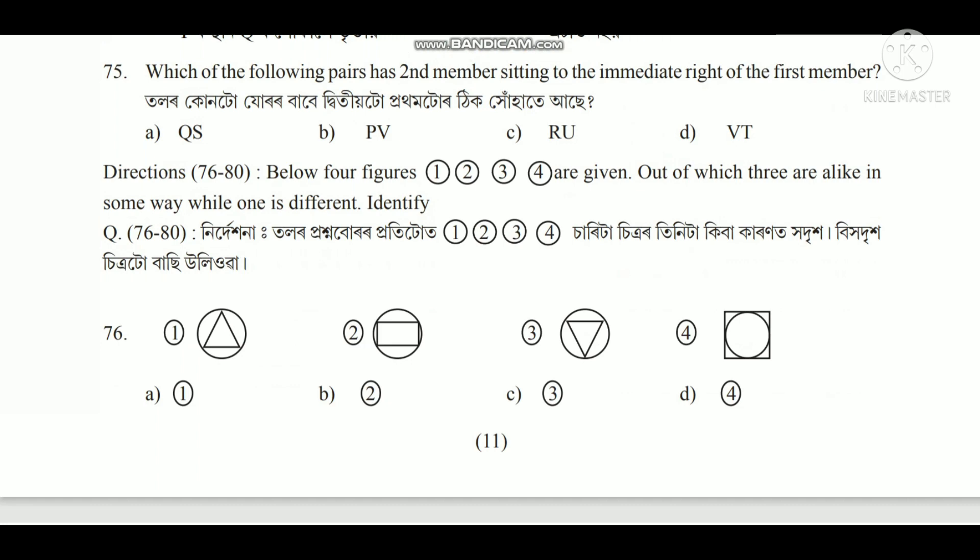Below four figures — one, two, three, four — are given. Out of which three are alike in some way while one is different; identify the odd one out.